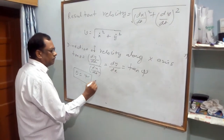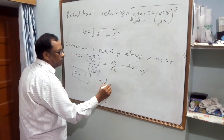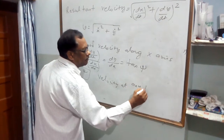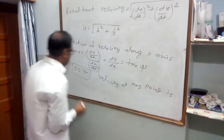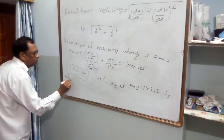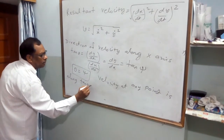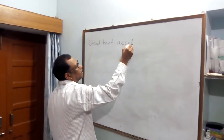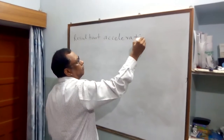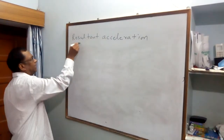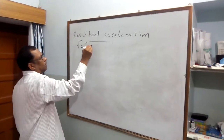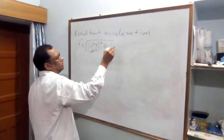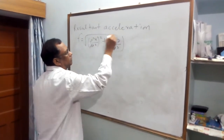Velocity at any point is the resultant of its components. The resultant acceleration is defined as f equals the square root of Fx squared plus Fy squared.